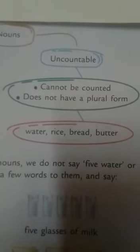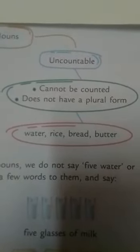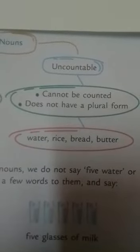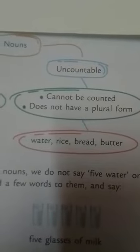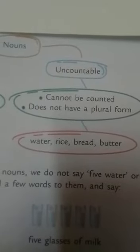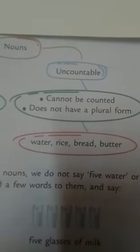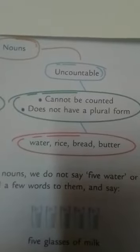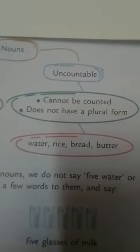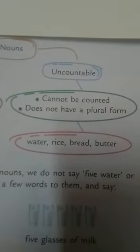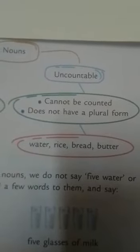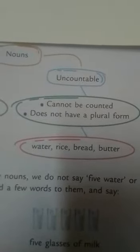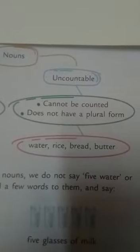Write it down. Uncountable nouns — I repeat — cannot be counted, does not have a plural form. Examples: water, rice, butter, bread. Sand and sugar you can also include if you want to.